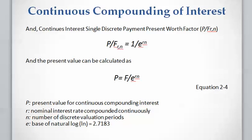Similarly, we can calculate the present value in the case of continuous compounding interest. The present value factor equals the inverse of the future value factor, so the present value can be calculated as P = F / e^(rn), where P is the present value for continuous compounding interest.